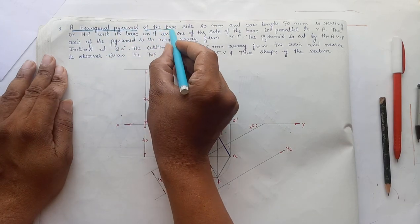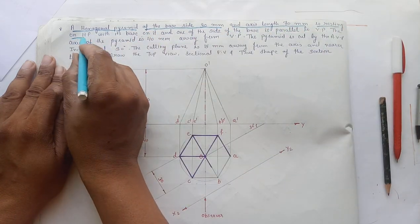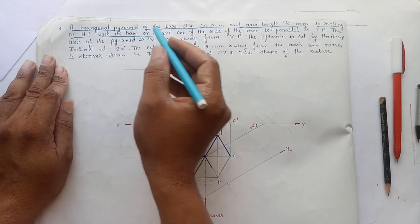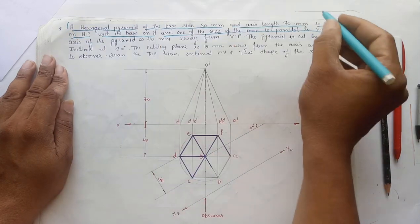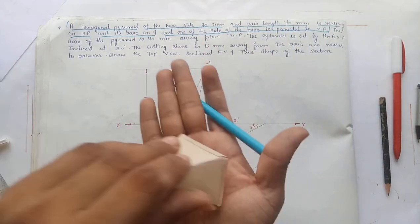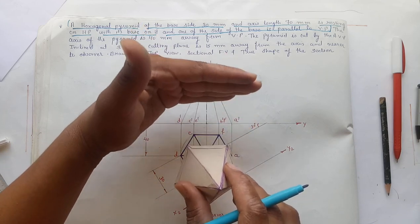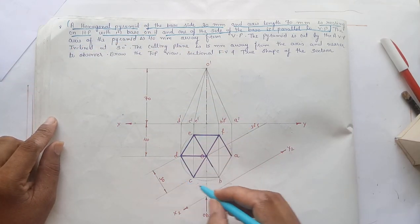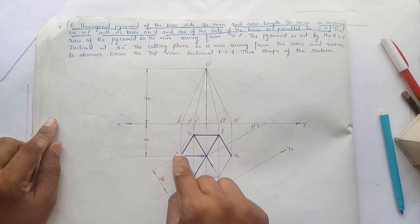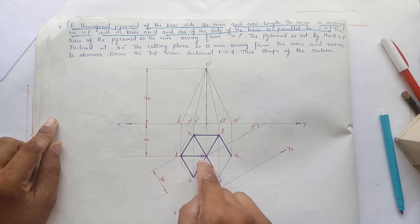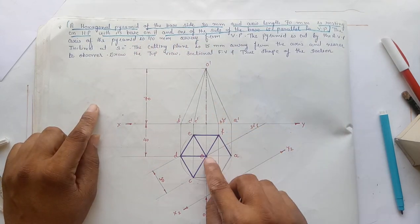Here we have a hexagonal pyramid with base side 30 mm and axis length 70 mm, resting on HP with its base on it, and one side of the base is parallel to VP. We have to draw the projection of the solid: base on HP, draw the pyramid with one edge parallel to VP, that is parallel to the XY line. Draw the plan of the hexagon by taking one edge parallel to the XY reference line, labeling ABCD and other vertices.